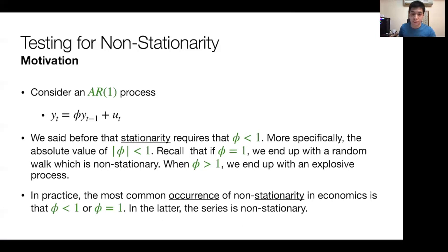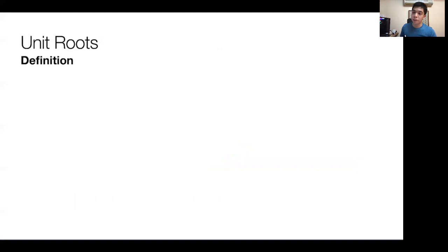But in practice, in economics at the very least, the most common occurrence for a non-stationary series is phi less than 1, that's a stationary series, or phi equal to 1, that's like a random walk. In the latter case, of course, the series is non-stationary.